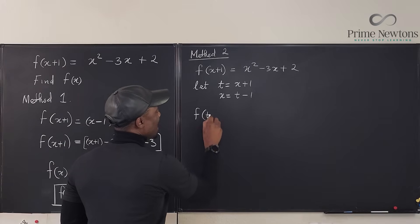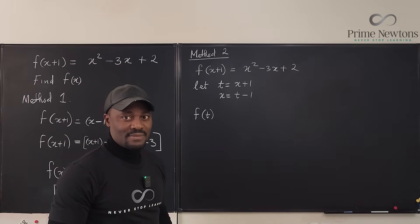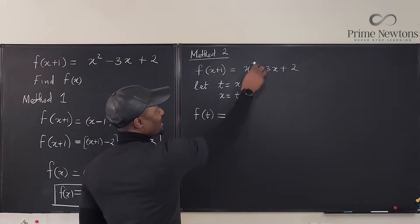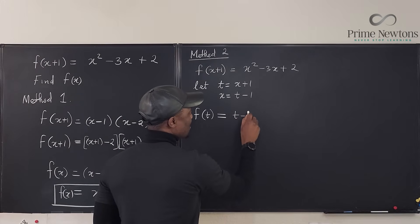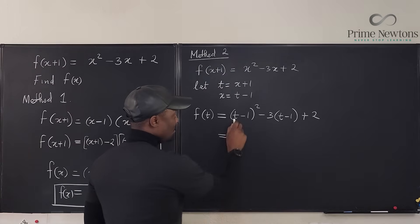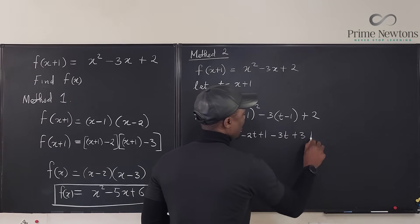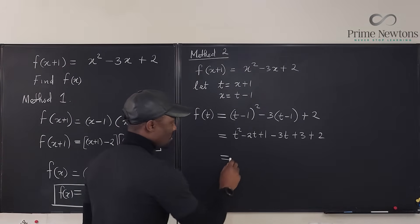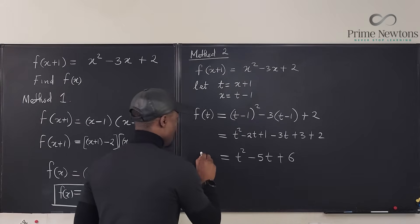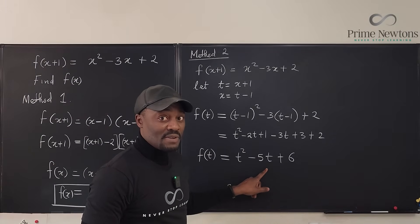So it becomes F of T. T is now the input — what would this machine do to T? X squared becomes T minus one squared, so we have T minus one squared, minus three times T minus one, plus two. Distributing: T squared minus two T plus one, minus three T plus three, plus two. Combining: T squared minus five T plus six.